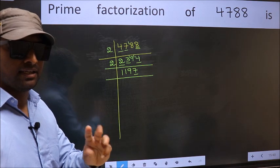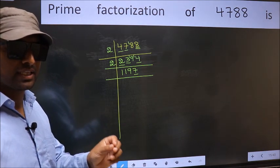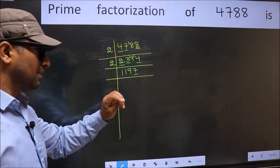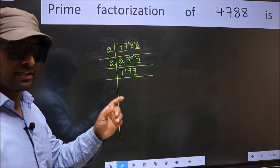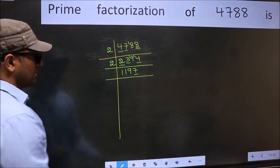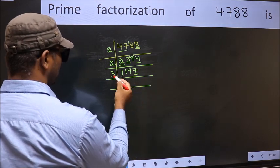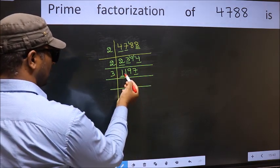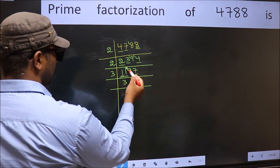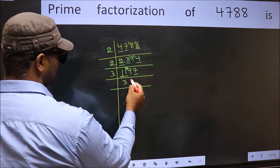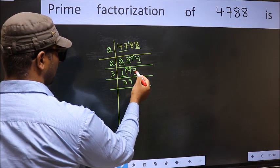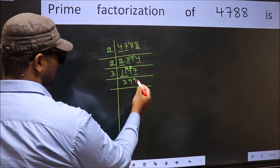Next prime number 3. To check divisibility by 3, we should add the digits: 1 plus 1 plus 9 plus 7 equals 18, and 18 is divisible by 3. So this number is also divisible by 3. So take 3 here. First number 1 is smaller than 3, so take 2 numbers: 11. A number close to 11 in the 3 table is 9 (3 threes). 11 minus 9 is 2, carried forward: 29. A number close to 29 in the 3 table is 27 (3 nines). 29 minus 27 is 2, carried forward: 27. When do we get 27 in the 3 table? 3 nines are 27.